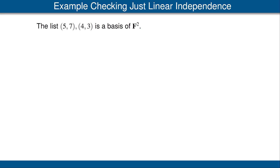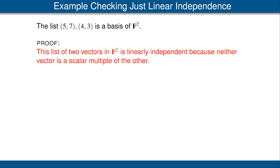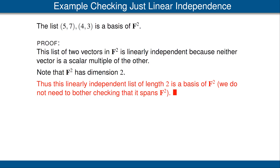Let's look at an example. We want to show that the list (5, 7), (4, 3) is a basis of F². This is a list of two vectors. A list of two vectors is linearly independent if and only if neither vector is a scalar multiple of the other — clearly true here. We also know that F² has dimension 2, because the standard basis of F² has length 2. Thus, by the previous theorem, this linearly independent list of length 2 is a basis of F². We don't even have to check that it spans F².